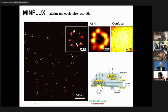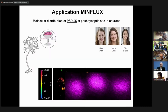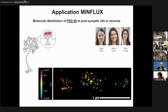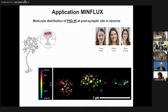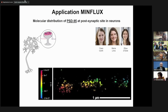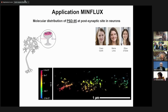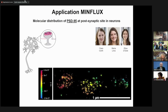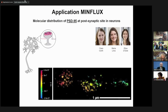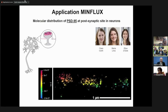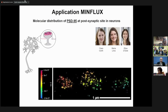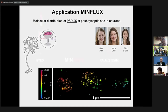A factor of 100 really means something — that's not something you can easily neglect. This approach can be applied to get three-dimensional pictures, for example of PSD-95, a protein in a neuron. It's being applied routinely; in fact, it's even been commercialized.